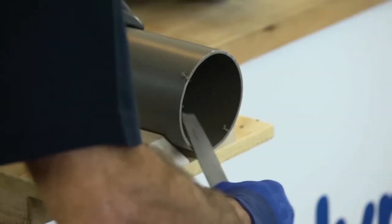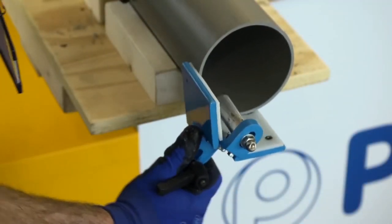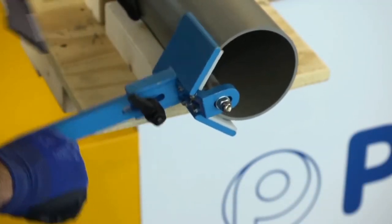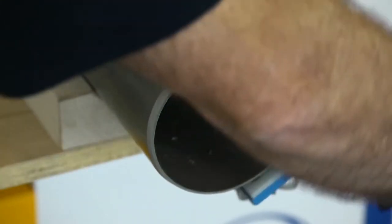Make sure you clean any burrs with a file before chamfering the pipe end. This will make insertion into the ring seal joint of another fitting easier. You'll find most spigot ends have moulded chamfered ends already.